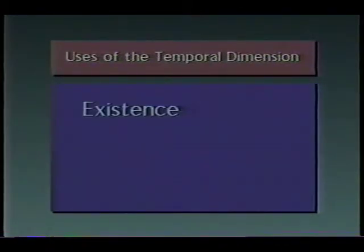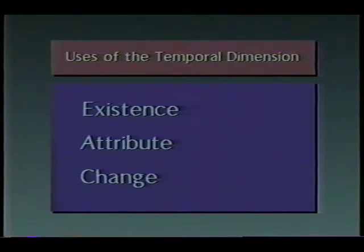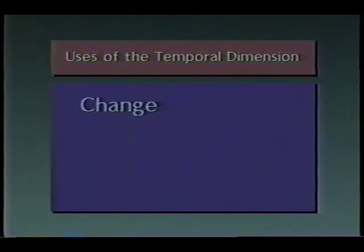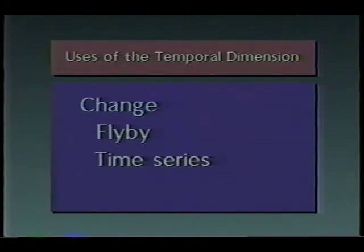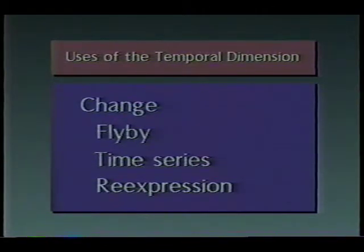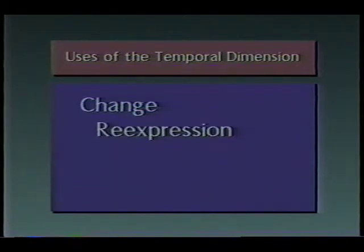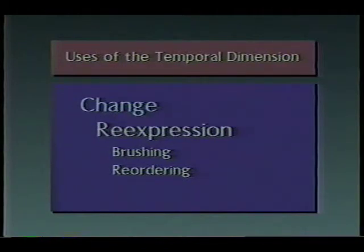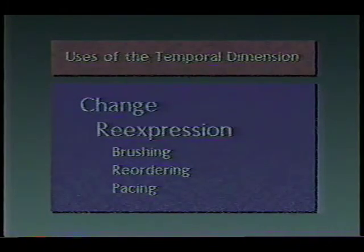At the most elementary level we have identified three uses for the temporal dimension in cartographic animation: to emphasize the existence of a phenomenon, to depict an attribute of the phenomenon, and to express change in the phenomenon's position or attributes. At least three animation strategies are available to represent geographic phenomena that change in time and space. The re-expression involves selecting and viewing subsets of scenes through brushing, re-ordering sequences of scenes according to some variable other than time, and pacing sequences to emphasize the differences among data values represented in the scenes. How fruitful are these techniques likely to be in other geographic analyses? Only time will tell.